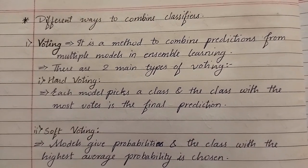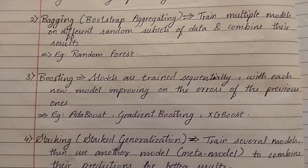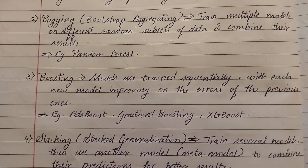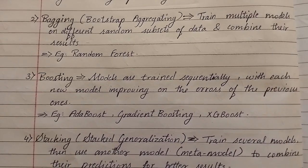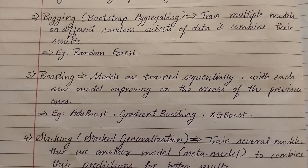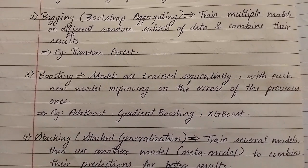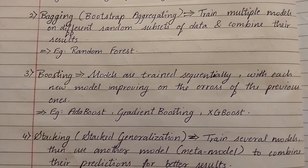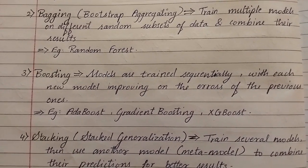The second way to combine classifiers is bagging, also termed as bootstrap aggregating. In bagging, multiple models are trained on different random subsets of data and their results are combined.